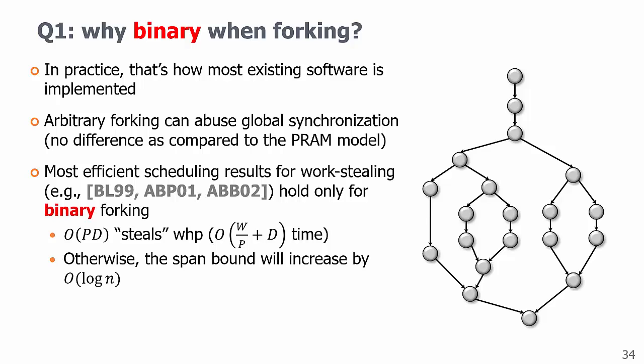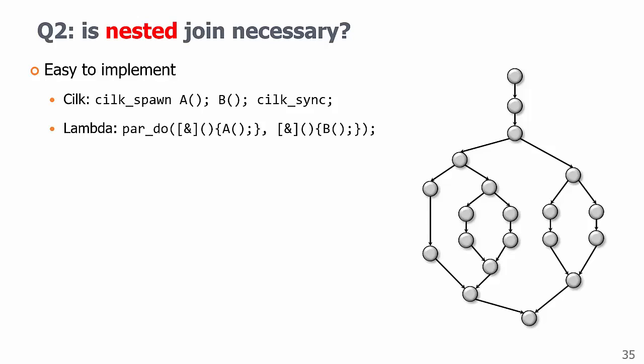The second question, is nested join necessary? If joins are nested, each join joins the two corresponding tasks by a fork. One reason is that this is easy to implement. Existing libraries usually have the built-in construct, like Cilk spawn, Cilk sync, or some lambda expression.